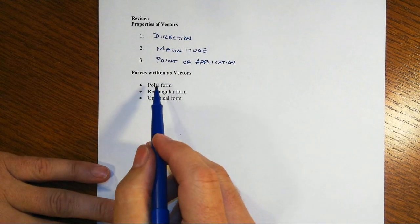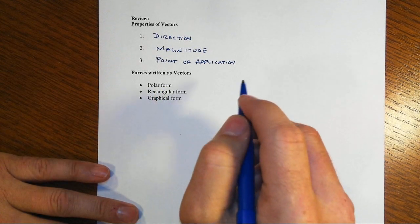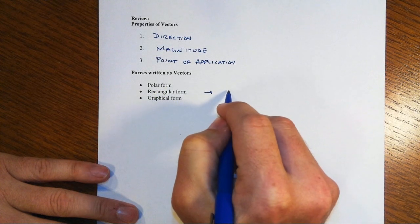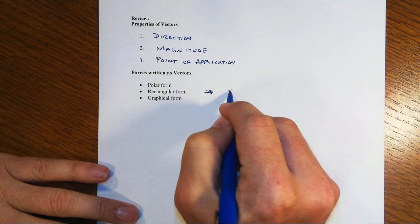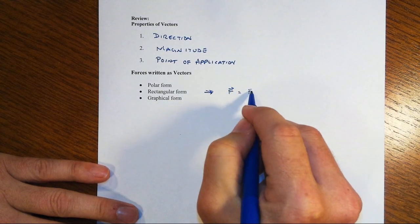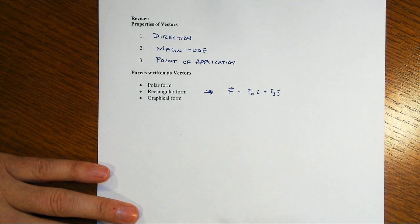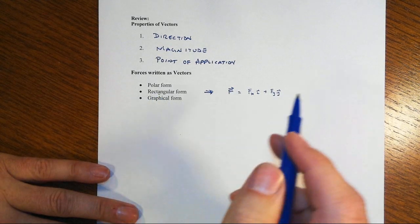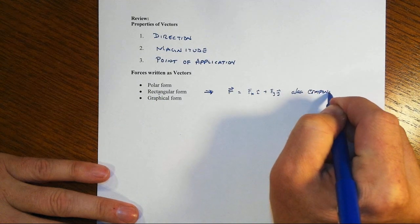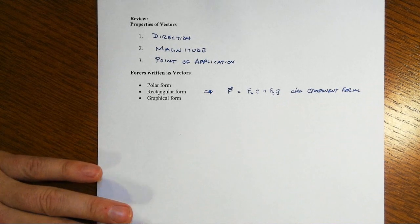Now we can write those forces in vector forms in three different ways: the polar form, rectangular form, and the graphical form. The rectangular form may be the most common that you're associated with. So for instance, a force written as a vector in rectangular form will have an x component and a y component. That would be the component form. And that's also sometimes the other name for this is the component form of the vector representation.